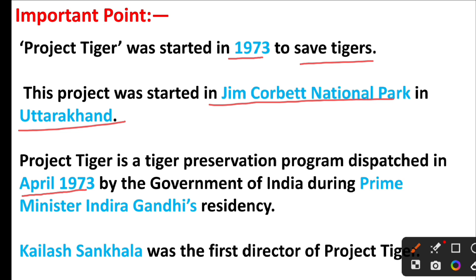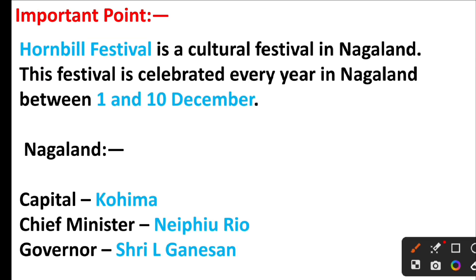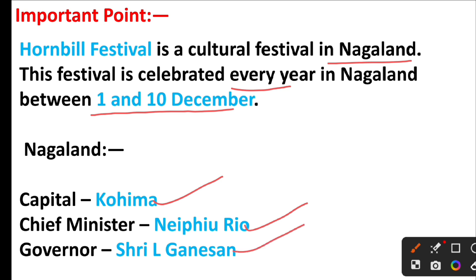Which article of the Indian Constitution deals with the election of the Vice President? The right answer is option B — Article 66. In which year did India launch Project Tiger? The right answer is option C — 1973. Project Tiger was started in 1973 to save tigers, launched in Jim Corbett National Park in Uttarakhand. It is a tiger preservation program dispatched in April 1973 by the Government of India during Prime Minister Indira Gandhi's tenure. Kailash Sankhala was the first director of Project Tiger.